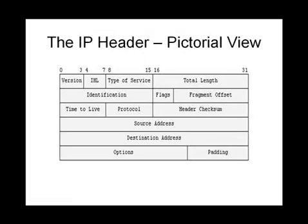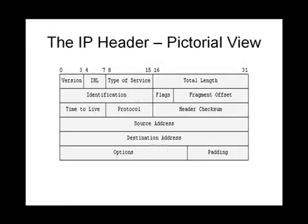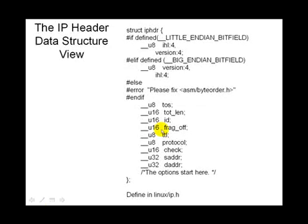Similarly, this is how the IP header looks, defined as struct iphdr in Linux's ip.h. There is a define for little-endian and then for big-endian, since network byte order is big-endian. In the big-endian case, we have version first and then IHL next; in the little-endian case it's reversed. We have version, IHL, type of service, and so on. We need to fill up all these fields in order to send out an IP packet.